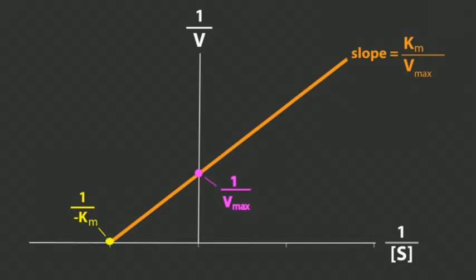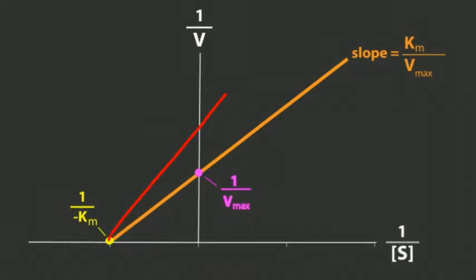If you add more enzyme, that increases Vmax, which flattens the graph — the slope is lower. But KM hasn't changed because KM is related to the enzyme's affinity for the substrate, not the enzyme concentration. Increasing the y-intercept means you have a lower Vmax because it's inversely proportional. And the further to the right the x-intercept is, the greater the KM. Be able to identify those two things.